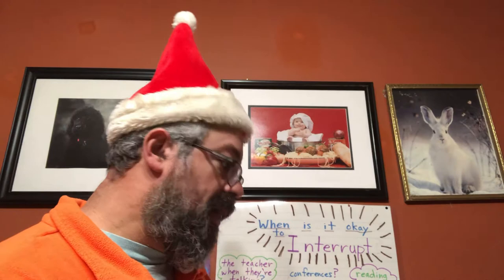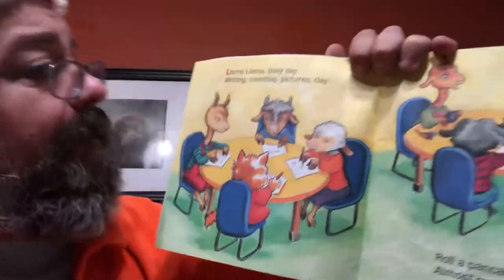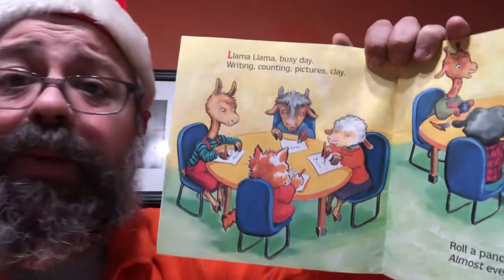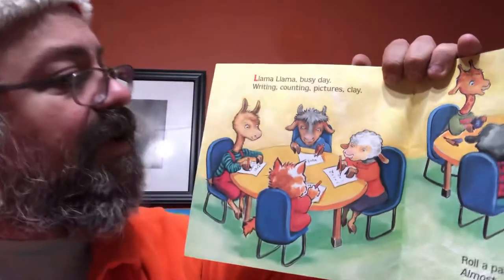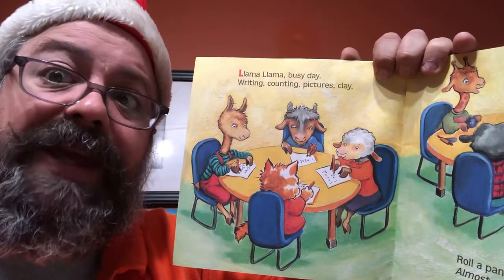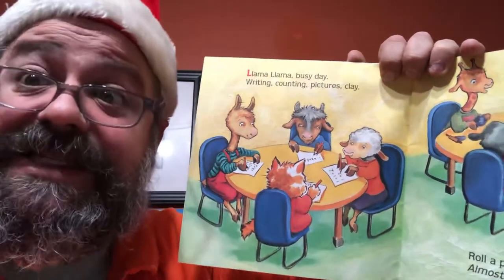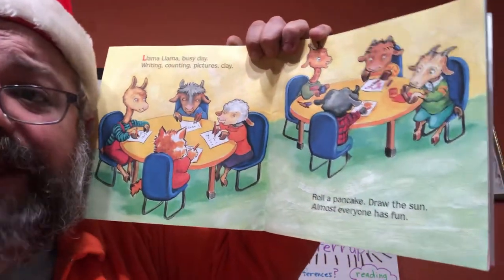Let's take a look at 'Llama Llama and the Bully Goat.' Llama is an animal — we're talking about animals in science. The dedication reads: 'To my sister Tanya with love.' The story begins: 'Llama llama, busy day — writing, counting, pictures, clay.' We can tell that the setting is the school — where you do writing, counting, drawing pictures, and sometimes using clay.